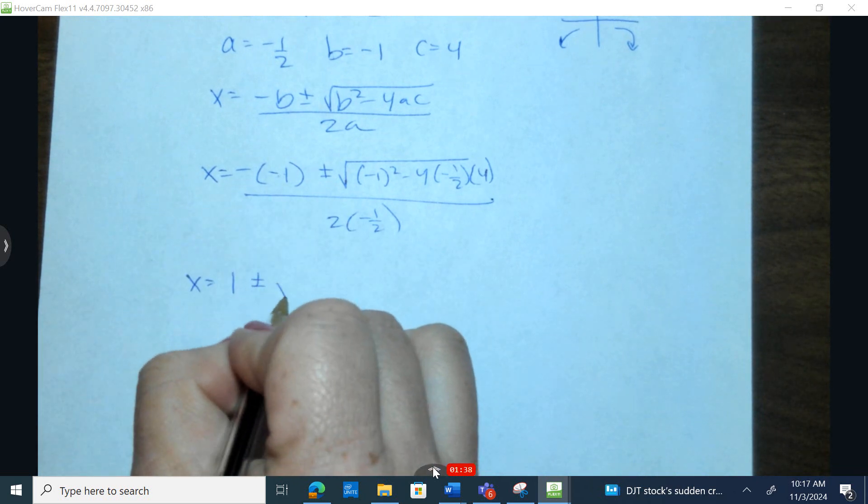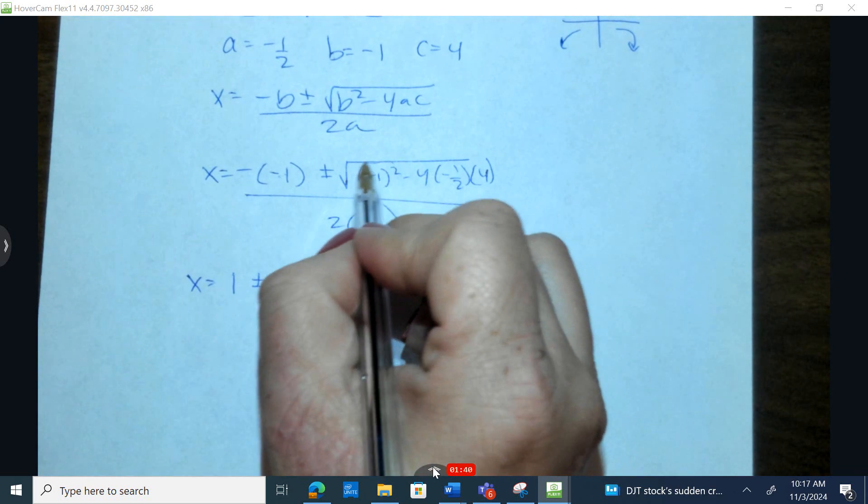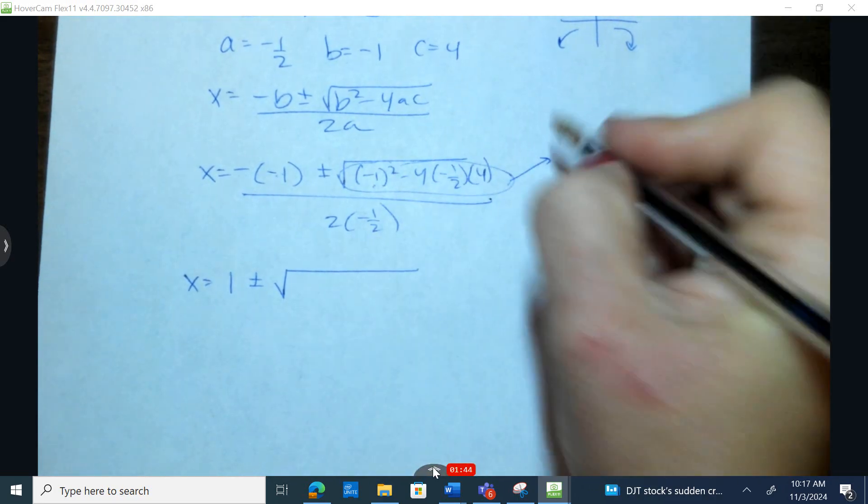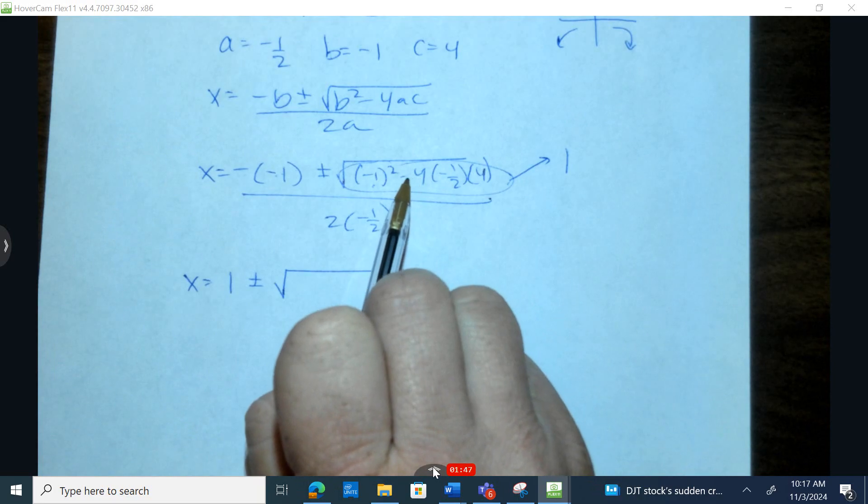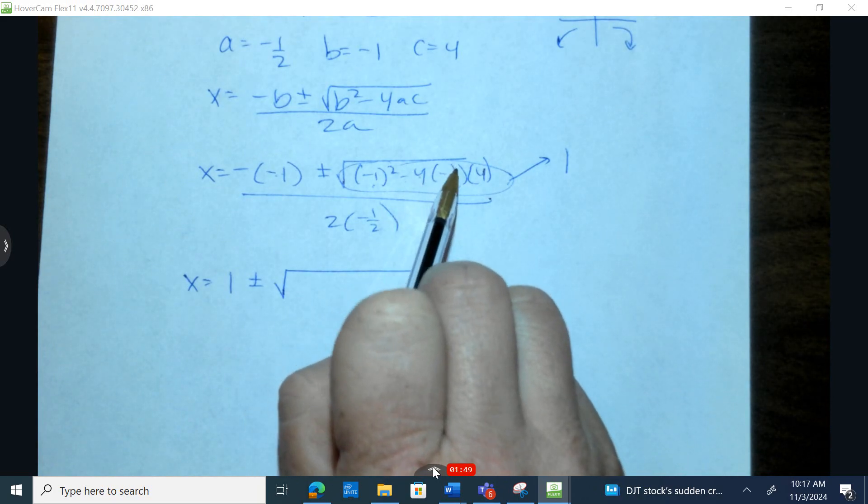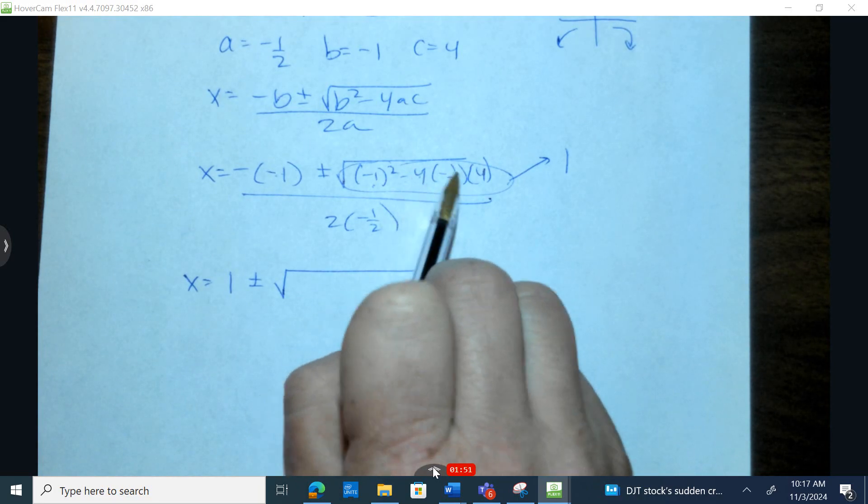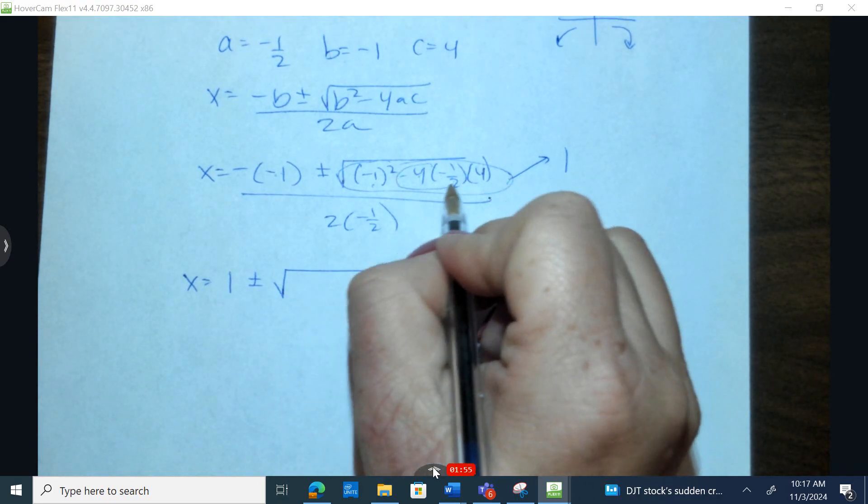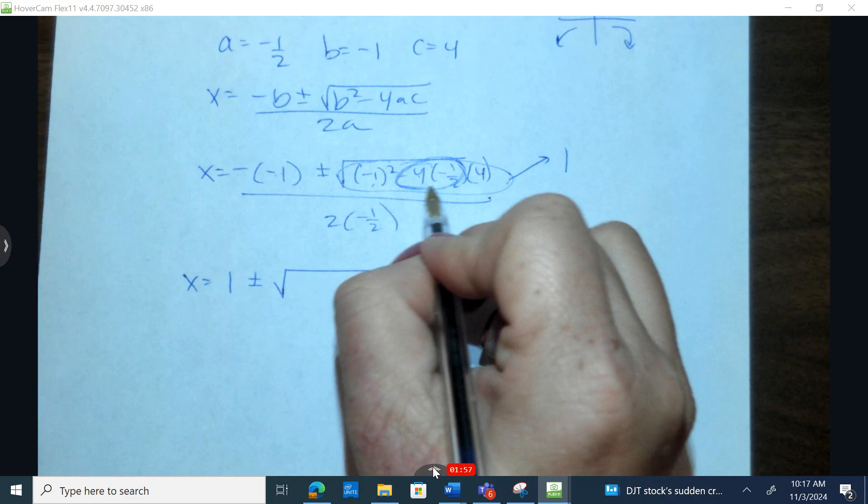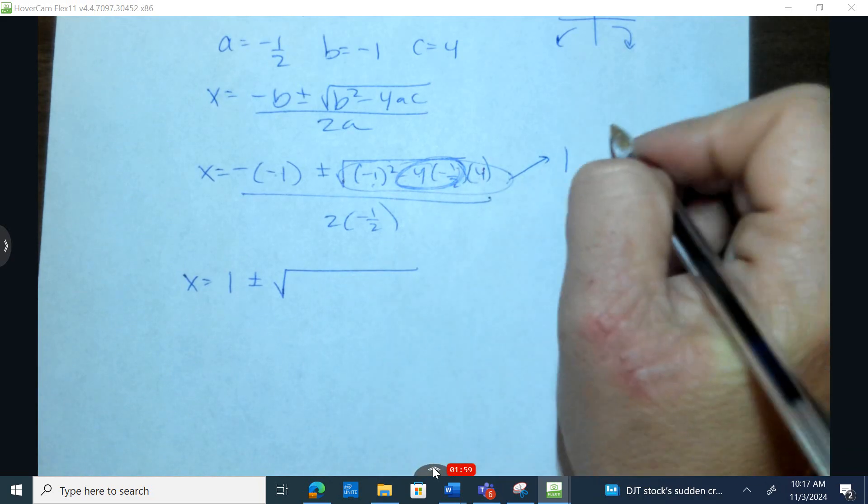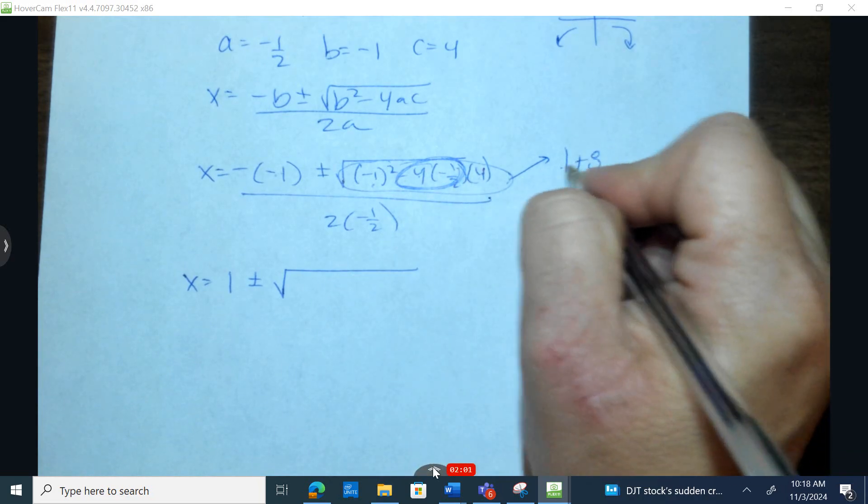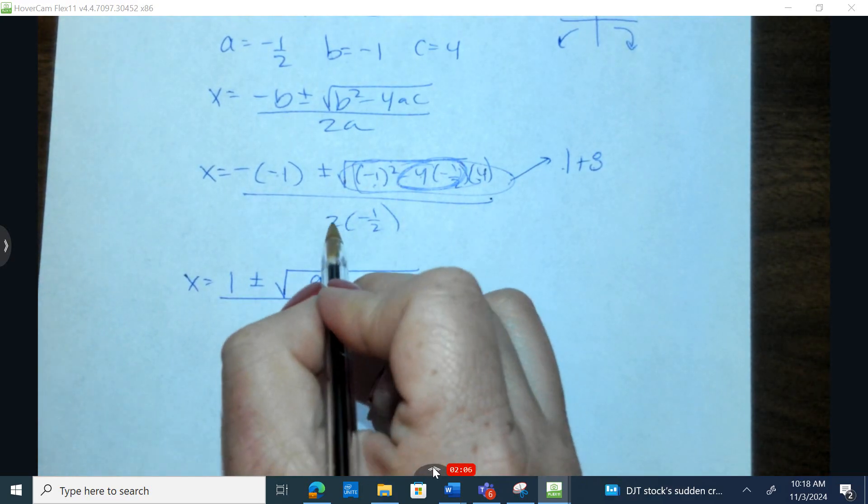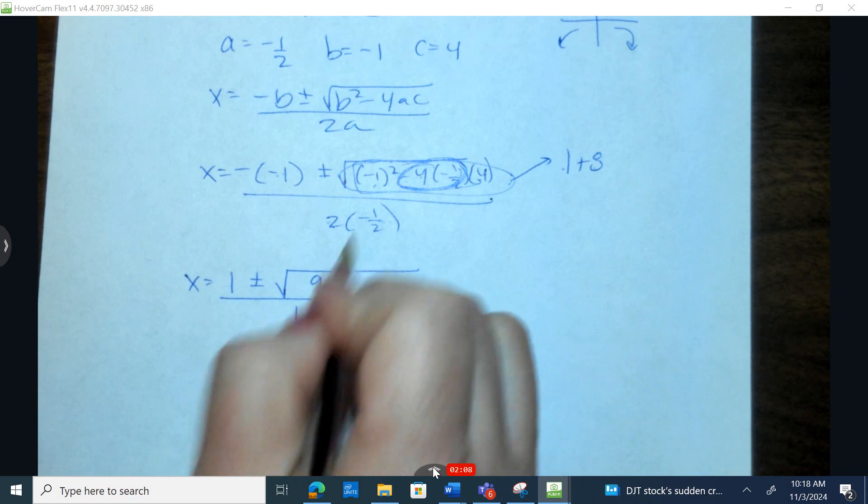Okay, I'm gonna come off to the side. I'm gonna figure out what this discriminant is inside. Negative 1 squared is 1. Now negative 4 times negative 1/2 times 4: half of 4 is 2, and two negatives make a positive, so this is positive 2. Positive 2 times 4 is 8. So 1 plus 8 is on the inside of this, or 9.